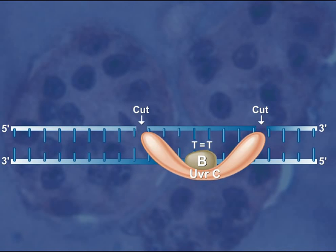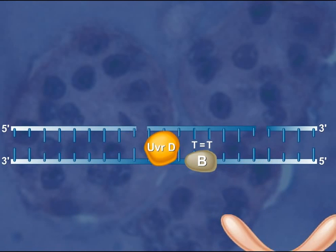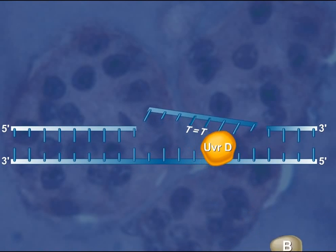Both cuts are several bases away from the damaged site. UV-R-D, a helicase, then binds to the site and separates the segment of damaged strand from the rest of the DNA molecule.